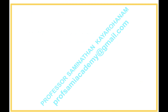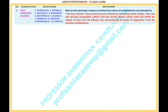Next slide, continuation of antihypertensives. Number 6: Beta-adrenergic blockers. Drugs: 1. Acebutolol, 2. Atenolol, 3. Betaxolol, 4. Bisoprolol, 5. Metoprolol, 6. Nadolol, 7. Nebivolol, 8. Pindolol, 9. Propranolol, 10. Timolol. Mechanism: bind to beta-adrenergic receptors and block the actions of norepinephrine and epinephrine. Beta blockers reduce blood pressure primarily by decreasing cardiac output. They may also decrease sympathetic outflow from the CNS and inhibit the release of renin from the kidneys, thus decreasing the formation of angiotensin 2 and the secretion of aldosterone.